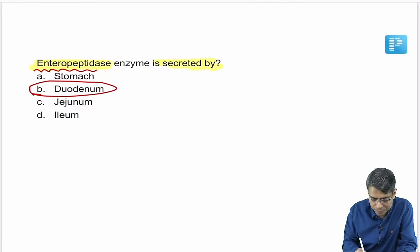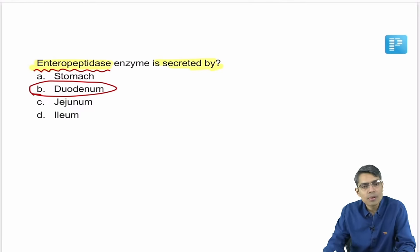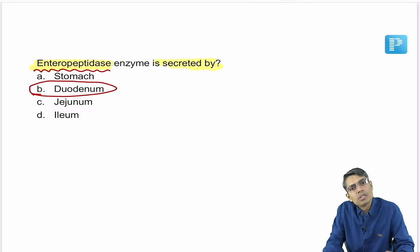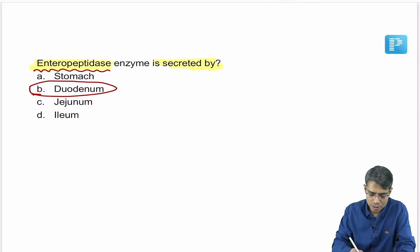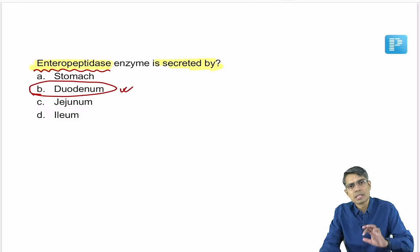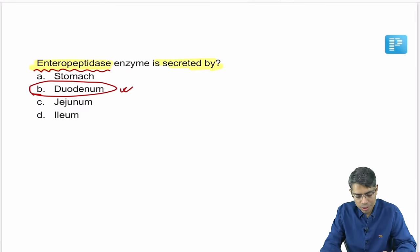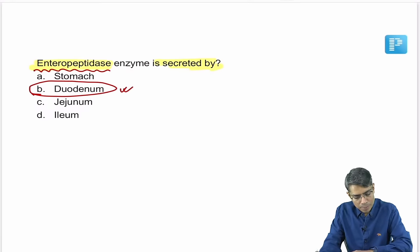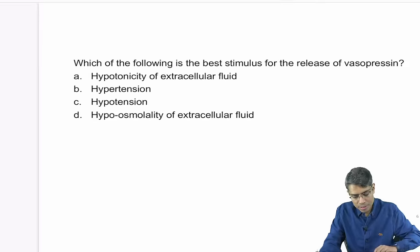Regarding whether you can leave physiology for the FMG exam: at least do the last five years' MCQs, since around 12 to 18 questions are asked from physiology. The single important fact here: enteropeptidase enzyme is present at the level of the duodenum and converts trypsinogen to trypsin.